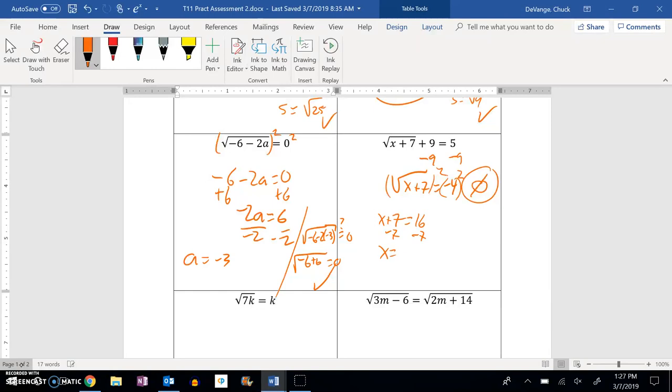Subtract 7 from both sides. x is 8. Let's plug it back in and see if that works. So plug it back in. 8 plus 7 plus 9, does that equal 5? So 8 plus 7 is 16.